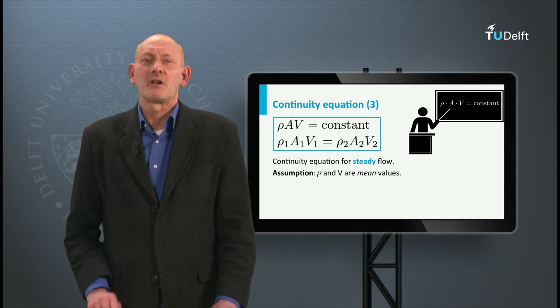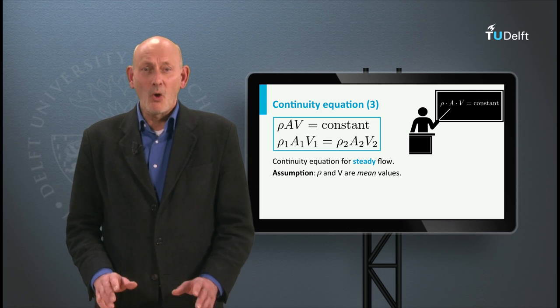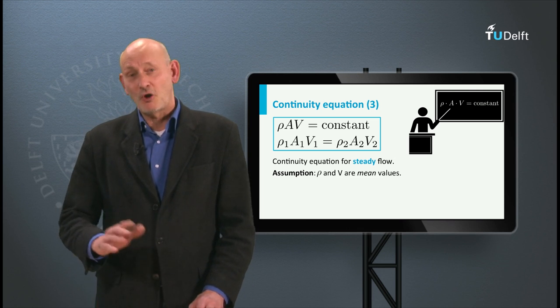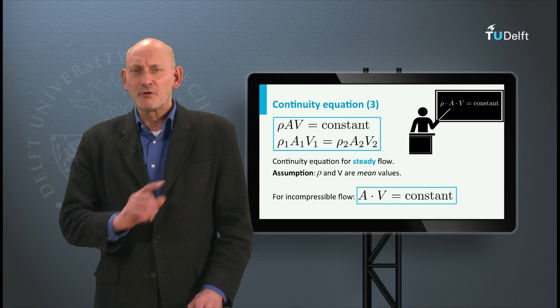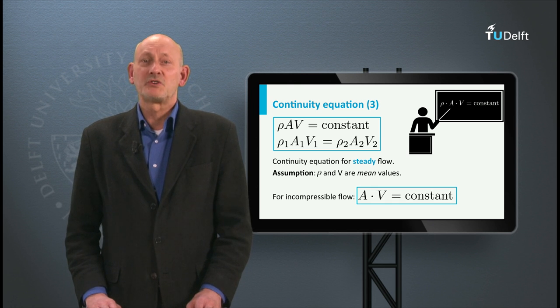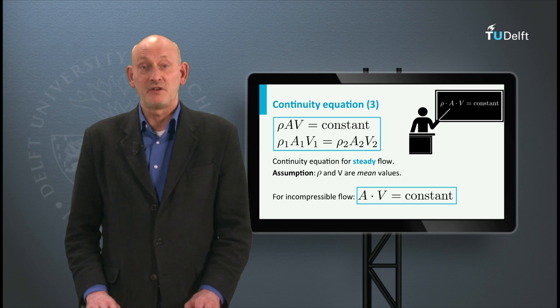There is an assumption underlying this equation, and that is that rho and V are mean values over the area. For incompressible flow, in which rho doesn't change, we can simplify the equation to A V is constant.